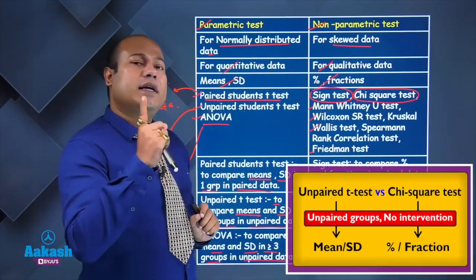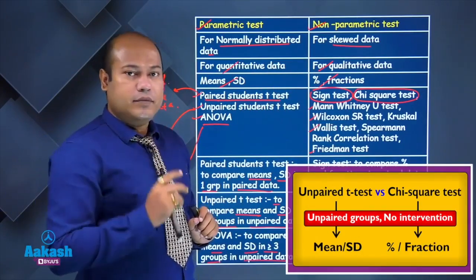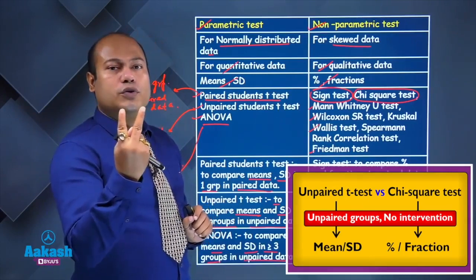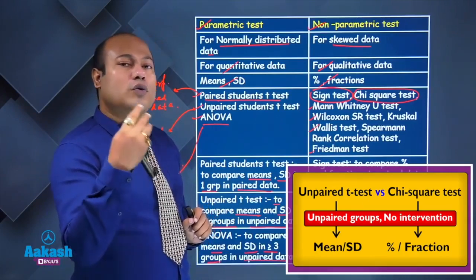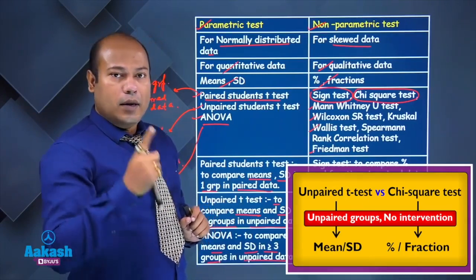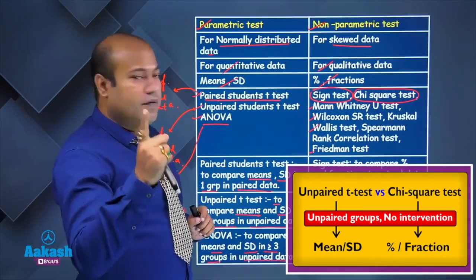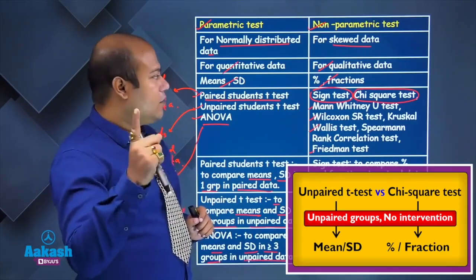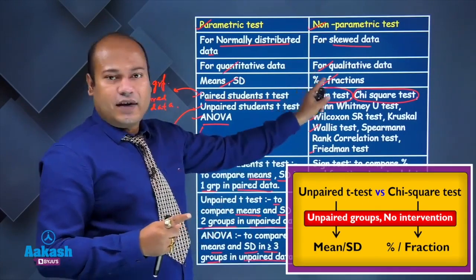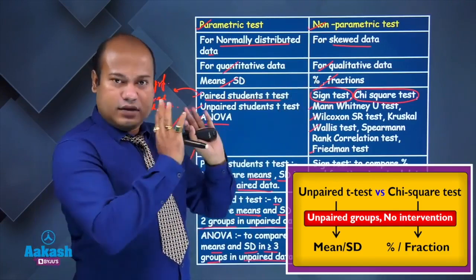For the chi-square test: again unpaired data, two groups or more than two groups, but comparison is done in terms of percentage, fraction, or proportion.